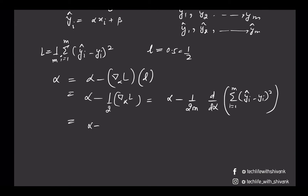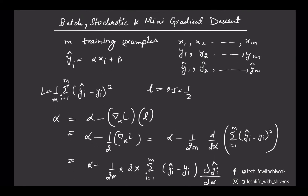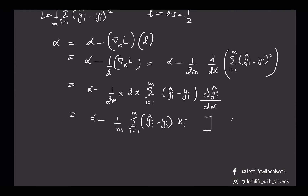This works out to alpha minus 1/(2m) times the sum of 2*(y_i-hat minus y_i) times the derivative of y_i-hat with respect to alpha. Which simplifies to alpha minus 1/m times the sum from i=1 to m of (y_i-hat minus y_i) times x_i, since the derivative of y_i-hat with respect to alpha is x_i. If we use all training examples, this is batch gradient descent.